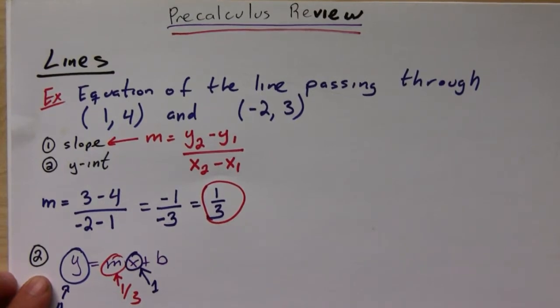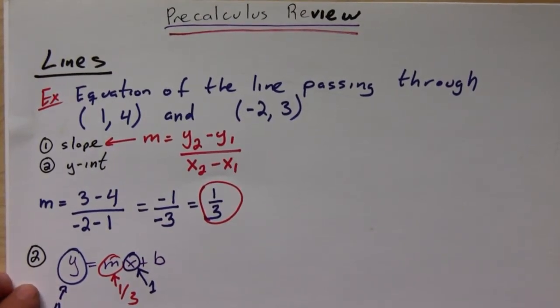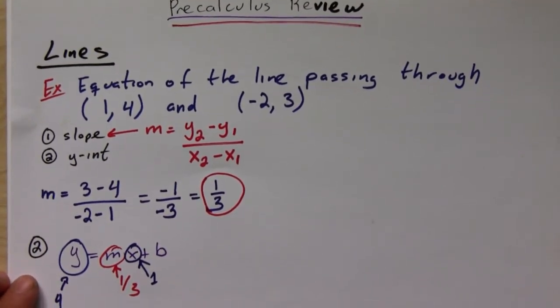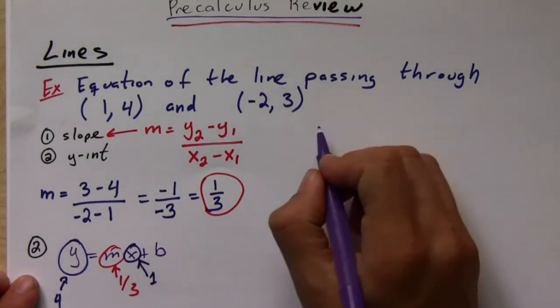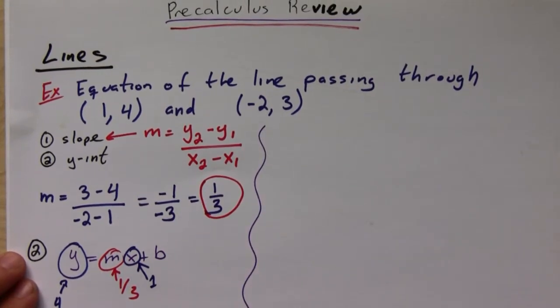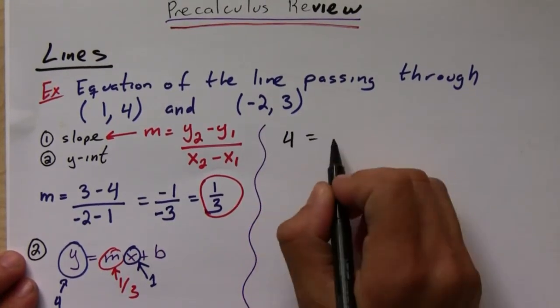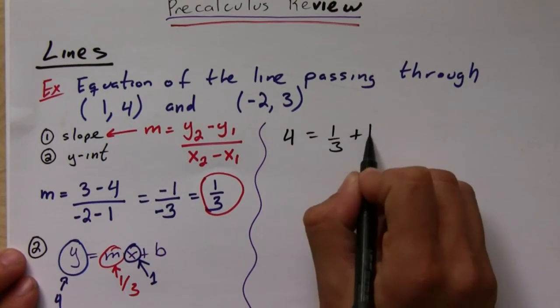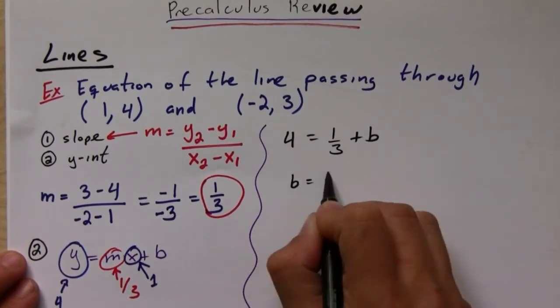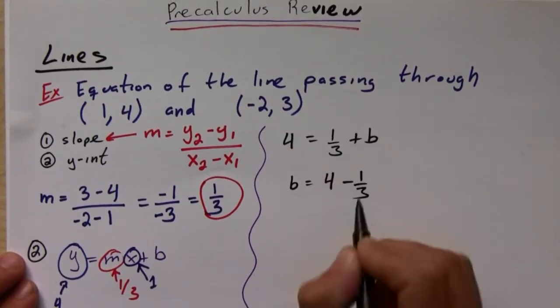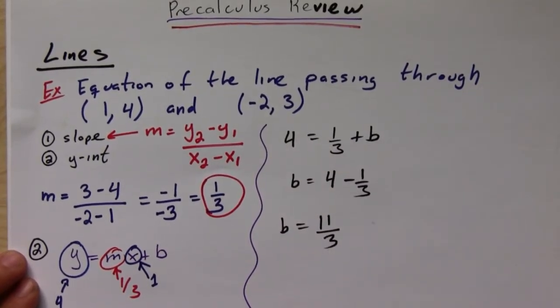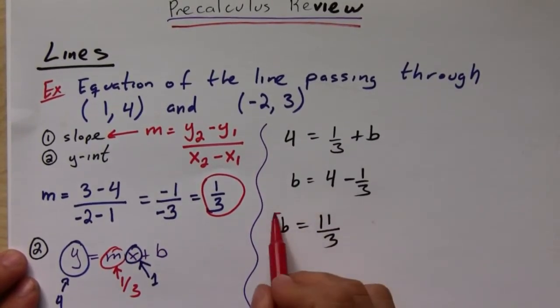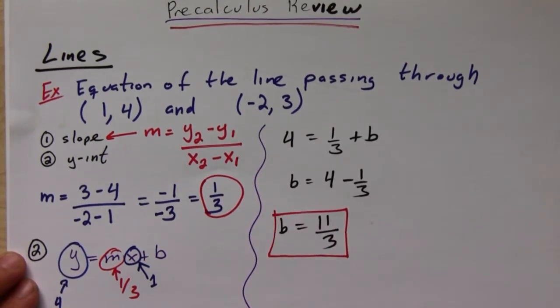So here what I get is 4 equals 1/3 plus b. So b equals 4 minus 1/3, so b is equal to 11/3.